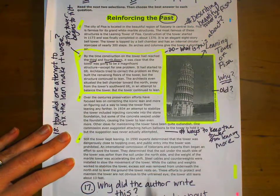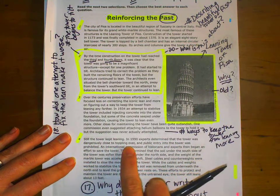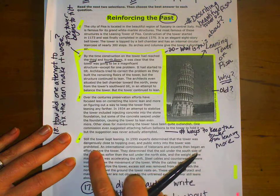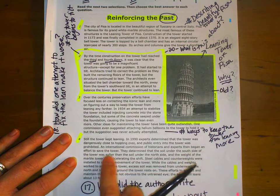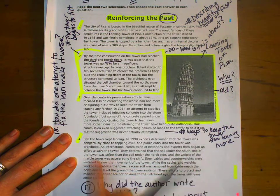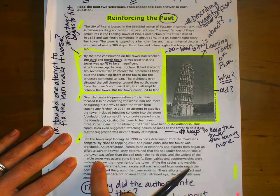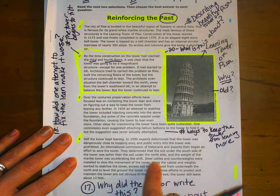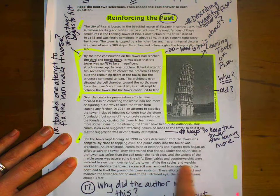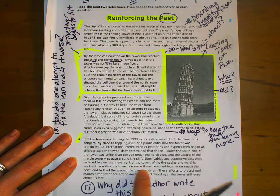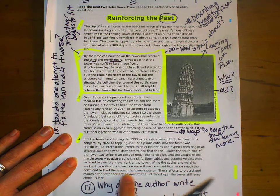Still, the tower kept leaning. In 1990, experts determined that the tower was dangerously close to toppling over, and the public entry into the tower was prohibited. An international commission of historians and experts then began an effort to save the tower, determined that the soil under the south side of the tower was soft soil under the north side, and the weight of the marble tower was accelerating the shift. Steel cables and counterweights were installed to slow the movement of the tower. While the cables and weights worked to stabilize the tower, excess soil was removed from underneath the north end to level the ground the tower rests on.